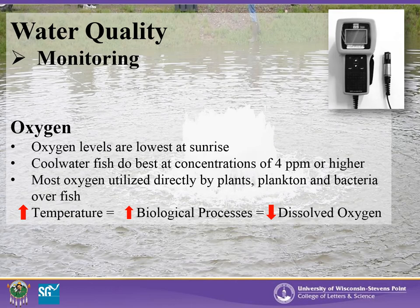Generally, fish perform well at dissolved oxygen concentrations above 4 parts per million. We like to see 6 to 7 parts per million in our ponds at UWSP and NADF. Another rule of thumb: as water temperature rises and biological processes increase, oxygen levels decrease.